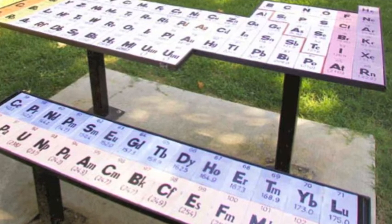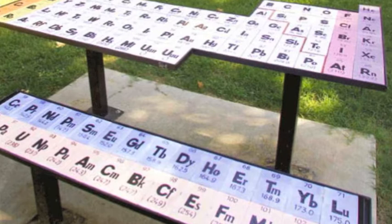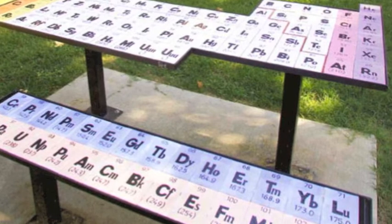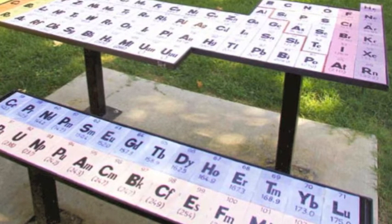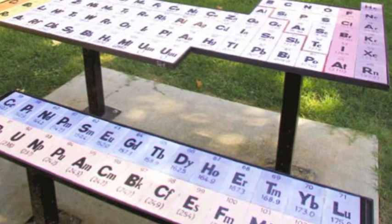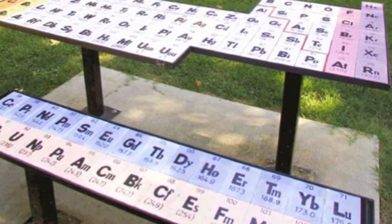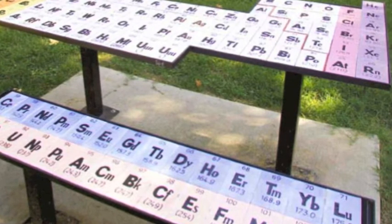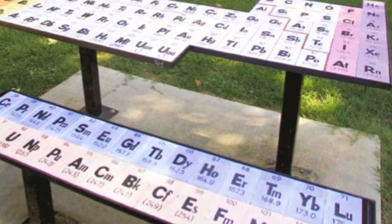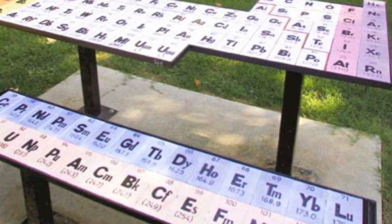Mendeleev's periodic table gradually became accepted by scientists. With a few adjustments as new discoveries were made, it led directly to the modern periodic table. This is now so familiar that you can see it on t-shirts and mugs. You can even sit down for a meal at one, as shown in this picture.